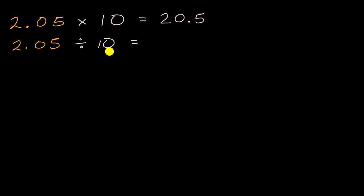So our two ones become two tenths. Our zero tenths become zero hundredths, and our five hundredths become five thousandths, giving us 0.205. We've covered that in other videos. Now let's do this with 100 or 1,000.